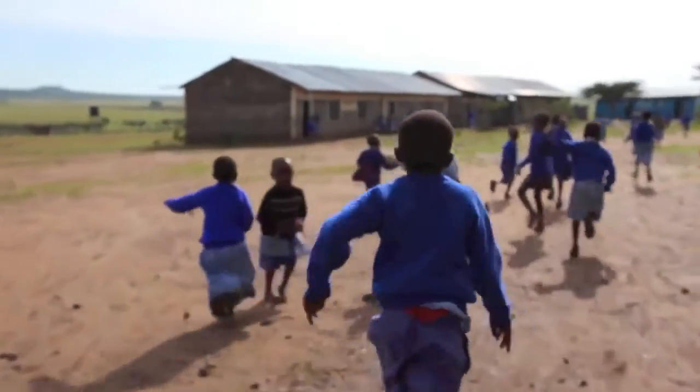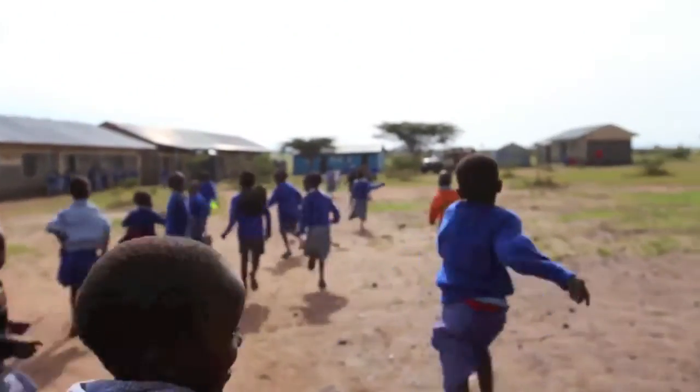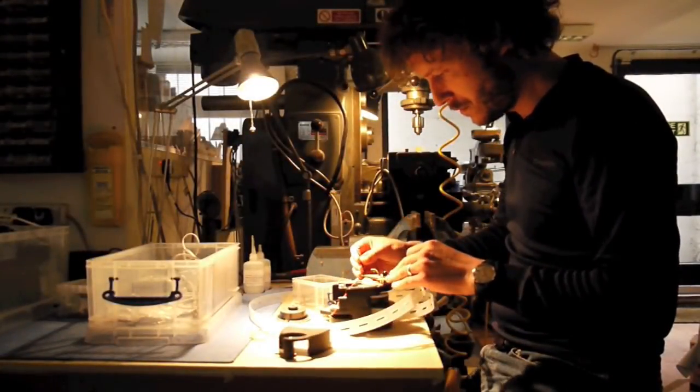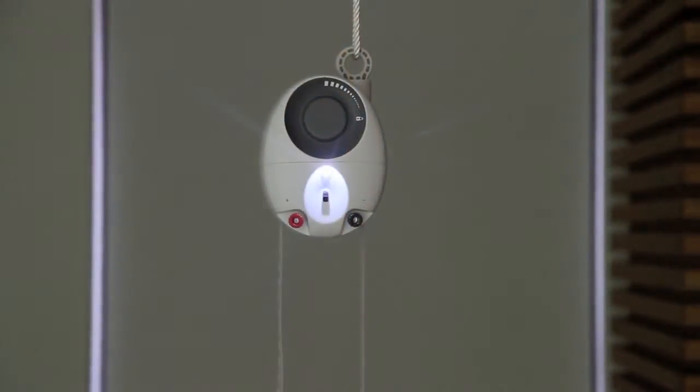The charity SolarAid challenged us to design an LED lantern for Africa but we ended up designing a radical new form of lighting. I'm Jim and this is Gravity Light.